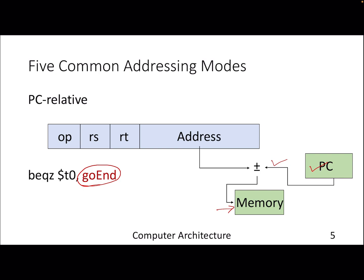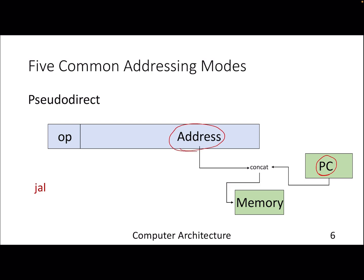The last is a bit subtle. This is called pseudodirect addressing mode. Here, what we are doing is concatenating the content of the program counter and the address provided in the instruction. If you go through the MIPS sheet, you will find that jump and link actually concatenates upper bits of the program counter with the address which is already provided by the instruction.